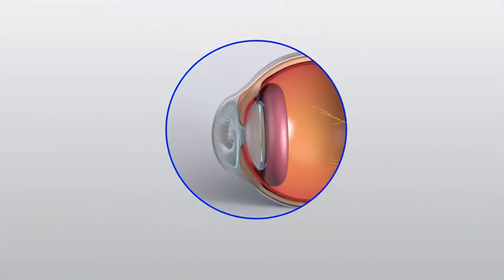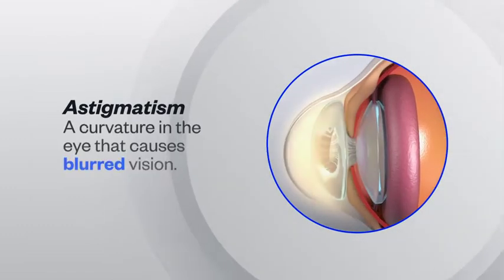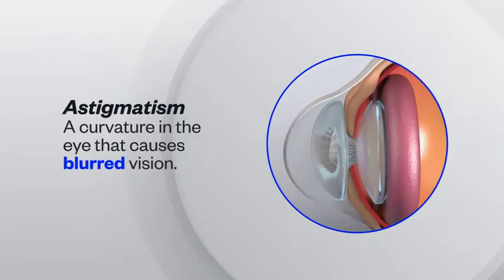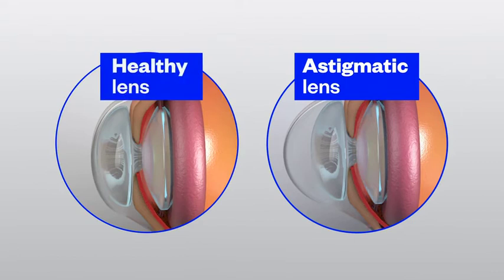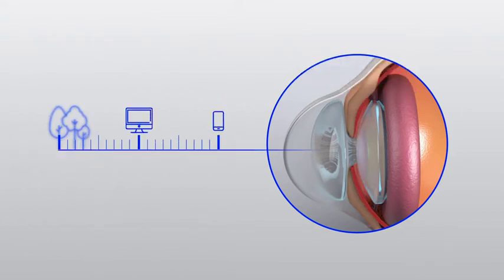The shape of your eye itself can determine the clarity of your vision. One common eye condition is astigmatism, a curvature of the eye that causes blurred vision. Instead of being curved like a round ball, the surface of the eye is shaped like an egg or football. This causes light rays entering the eye to bend in a way that blurs vision at all distances.